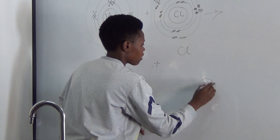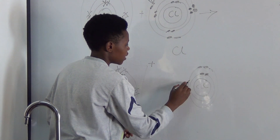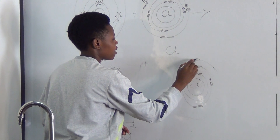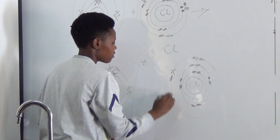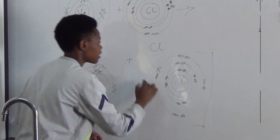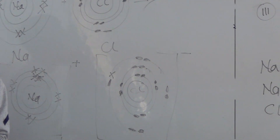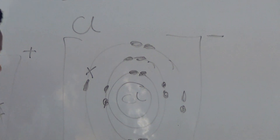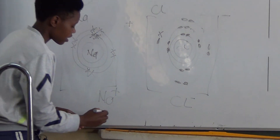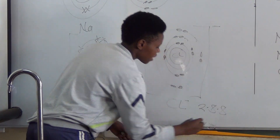Chlorine gains an electron. Chlorine has 2 electrons in the innermost energy level and 8 in the second energy level. Now it has gained 1 electron from sodium, so it has 8 electrons in the outermost energy level. Now that it has gained an electron, it becomes an ion, and we put a negative there to show it has gained — or borrowed — an electron. The chemical configuration of sodium as an ion is 2, 8. Chlorine's ionic configuration is 2, 8, 8.